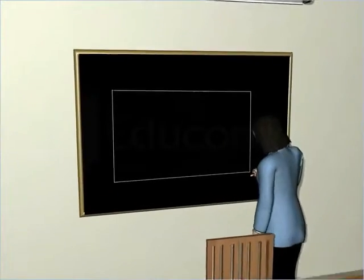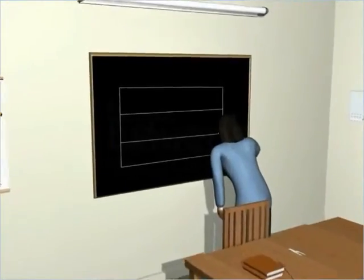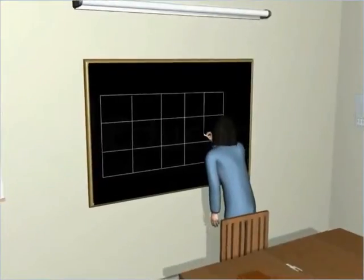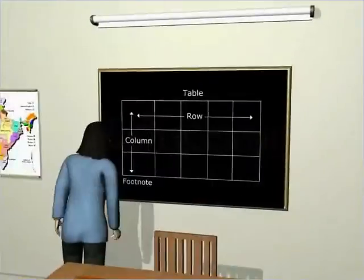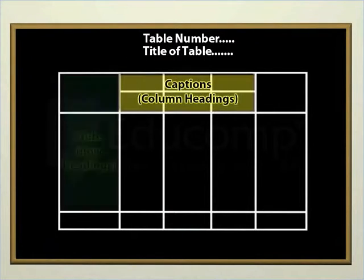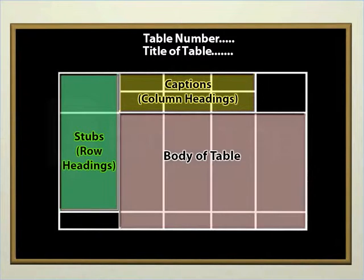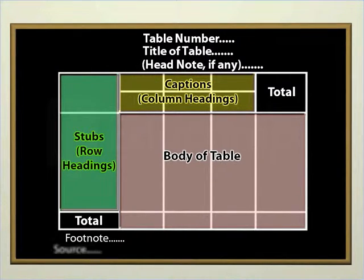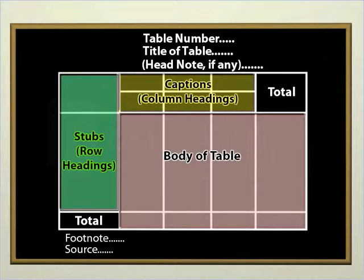One of the simplest ways of presenting data is in the form of tables, where data is presented in rows and columns along with some explanatory notes. The major parts of a statistical table are table number, title, captions and stubs, body of table, headnote, footnote and source. When these parts are put together in a systematic manner, they form a table.